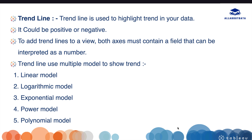So, what is a trend line? A trend line is used to add or highlight a trend in your data — it could be a positive or negative trend. For example, if you are analyzing sales, you can use a trend line to see if your sales are increasing or decreasing. To add a trend line to the view, both axes must have a field that can be interpreted as a number. You can't use a trend line if you are using, for example, product name on one axis. Tableau has multiple models: linear, logarithmic, exponential, power, and polynomial.